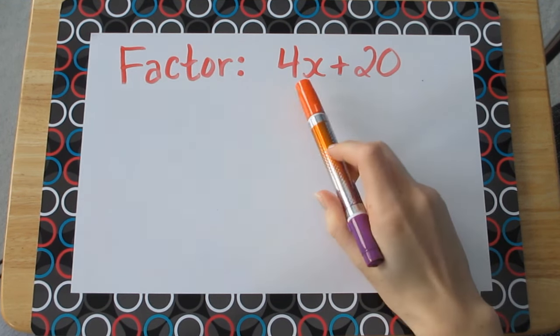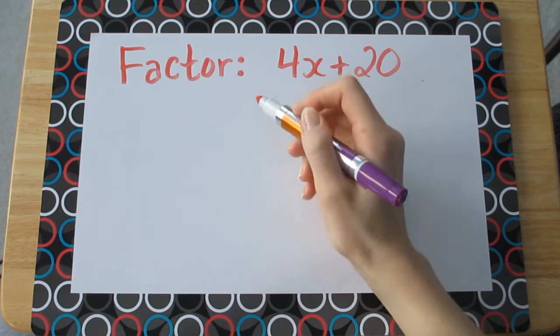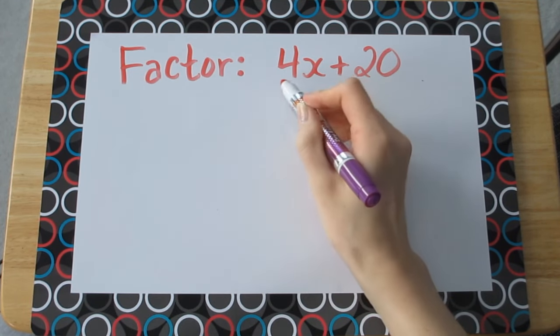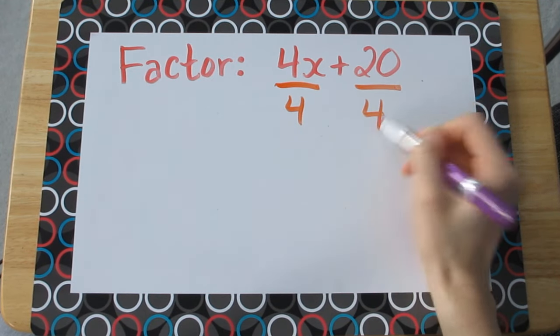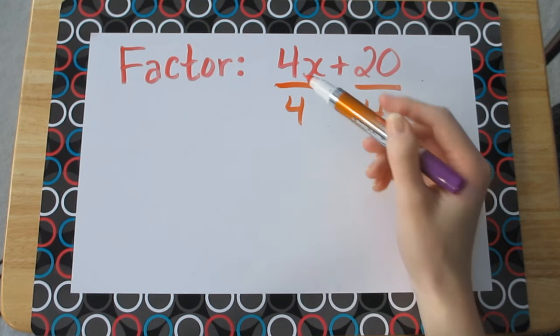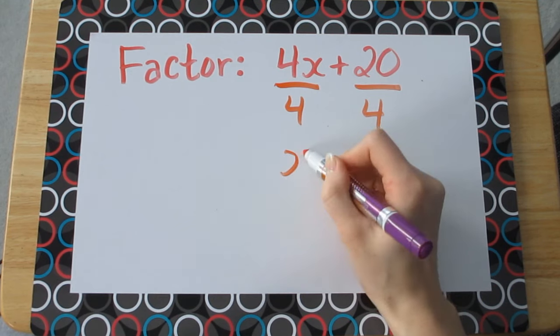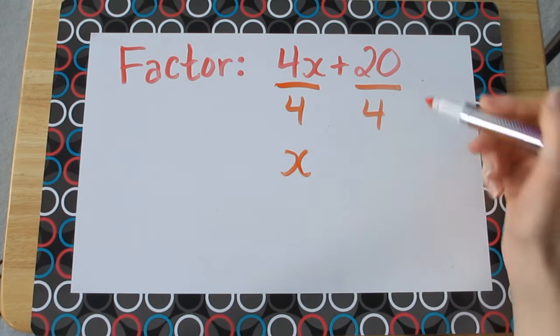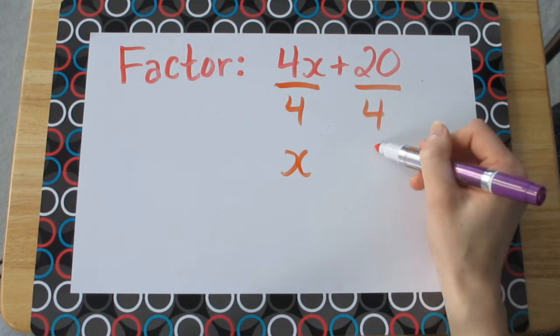So let's go back to this original question, 4x plus 20. We know that our common factor is going to be 4, so we want to divide each term by 4. Keep in mind we're working backwards to get to the multiplication, so that's why we're dividing. So here, dividing 4x by 4, what will that give us? That'll give us an answer of just x. And what about here? 20 divided by 4, that gives us an answer of 5.